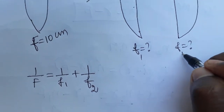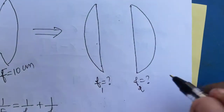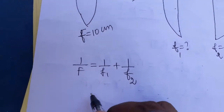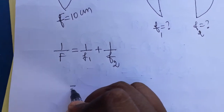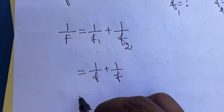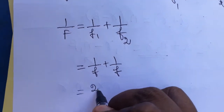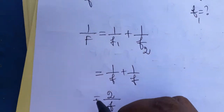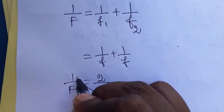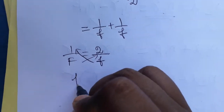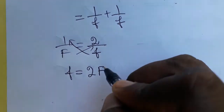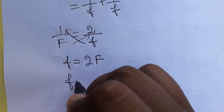Since the biconvex lens is split into two equal halves, f1 and f2 will be the same focal length. So 1/f + 1/f = 2/f = 1/F. Therefore f = 2 × F. Since F is 10 centimeters, the individual focal length f is equal to 20 centimeters.